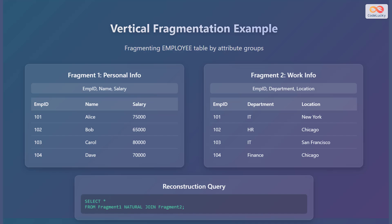Fragment 1 includes personal information such as employee ID, name, and salary. Fragment 2 includes work information such as employee ID, department, and location. To reconstruct the complete employee table, we can use the following query: SELECT * FROM fragment1 NATURAL JOIN fragment2. This query combines the personal and work information fragments back into a single complete table.